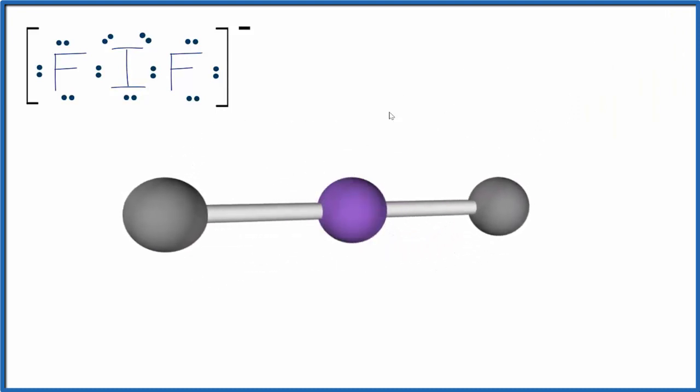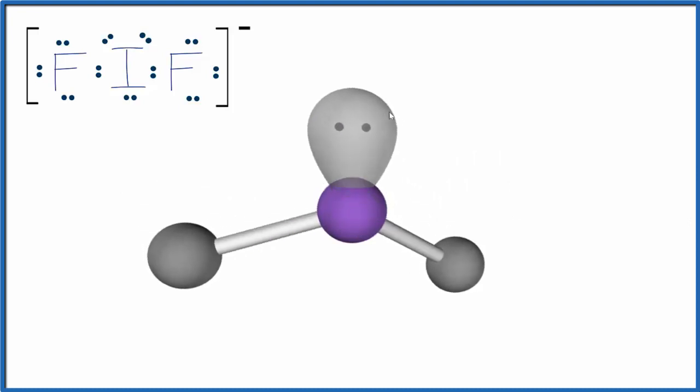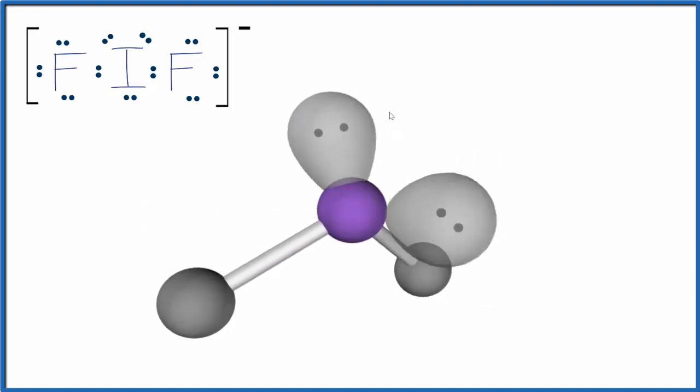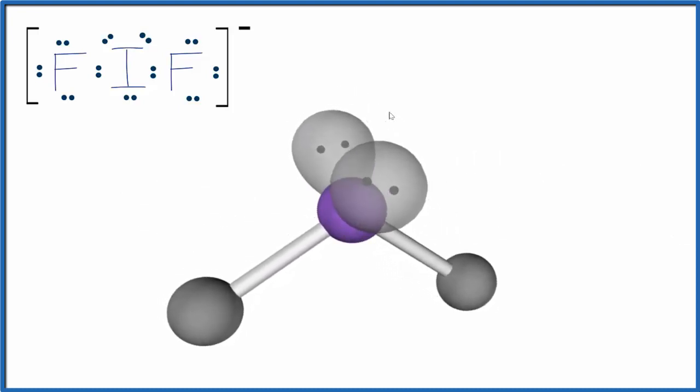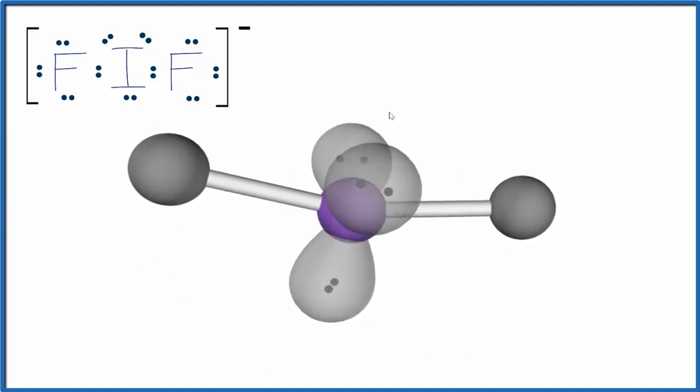But we have those three lone pairs. They occupy space, and they'll repel these atoms here as well. So one, you can see it pushes down the two fluorine atoms. Two. And then finally, the third one puts this into what we call a linear molecular geometry.